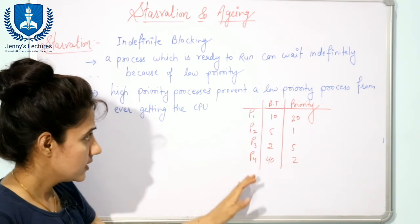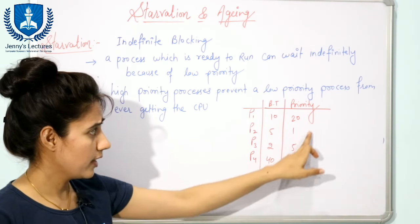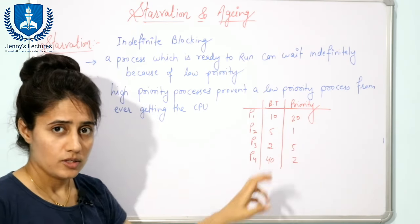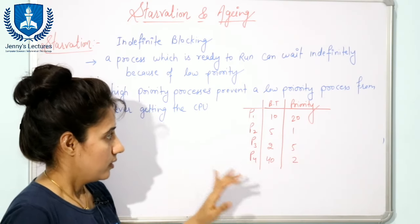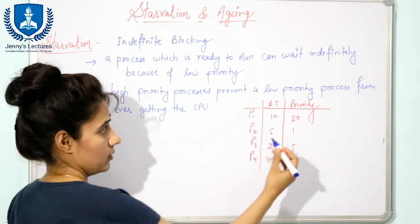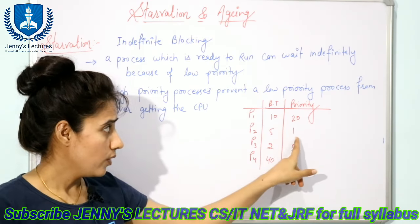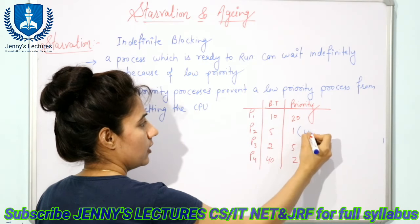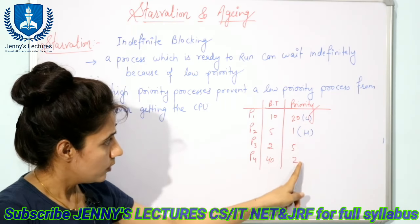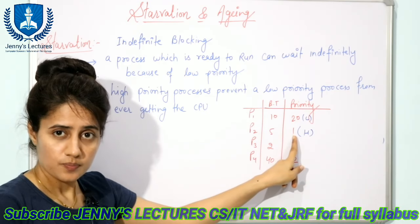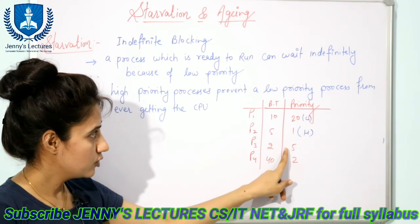Let us take an example. Suppose we have four processes with burst times and priorities given as 2, 1, 5, and 2. Taking lesser the number as higher the priority, priority 1 is the highest and the last process is having the lowest priority. The CPU would be allocated first to P2, then P4, then P3, and after that P1.